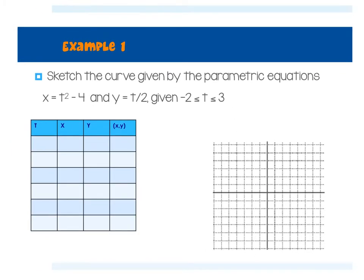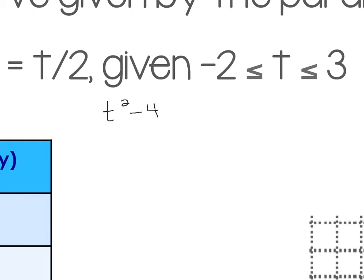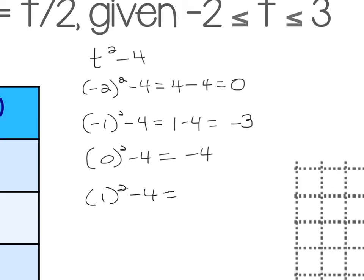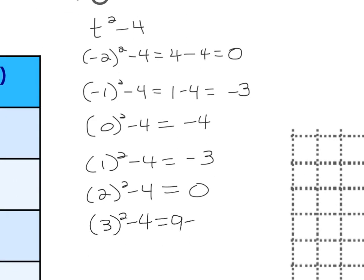Sketch the curve given by the parametric equations X equals T squared minus 4 and Y equals T over 2, given that T is between negative 2 and 3 inclusive. So my T values are negative 2, negative 1, 0, 1, 2, and 3. Plugging into X = T² − 4: negative 2 squared minus 4 is 0; negative 1 squared minus 4 is negative 3; 0 squared minus 4 is negative 4; then negative 3, 0, and 5.